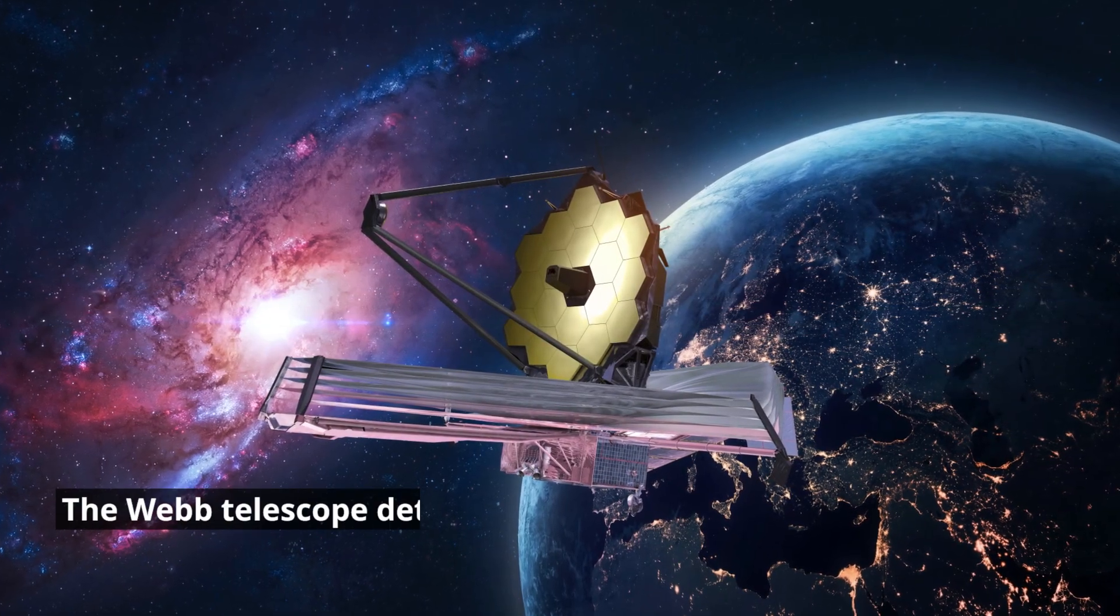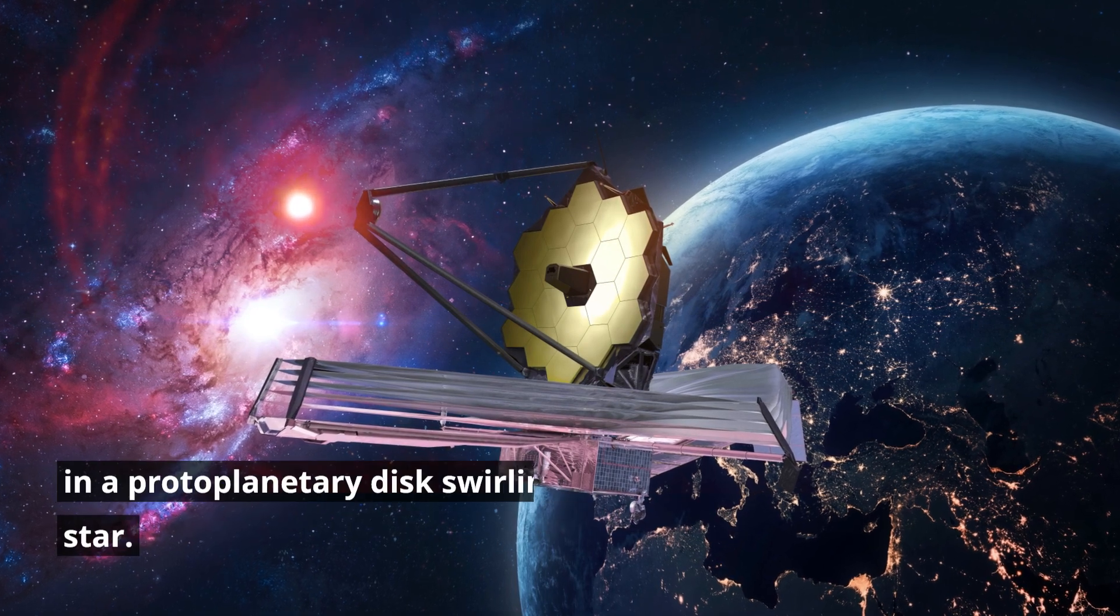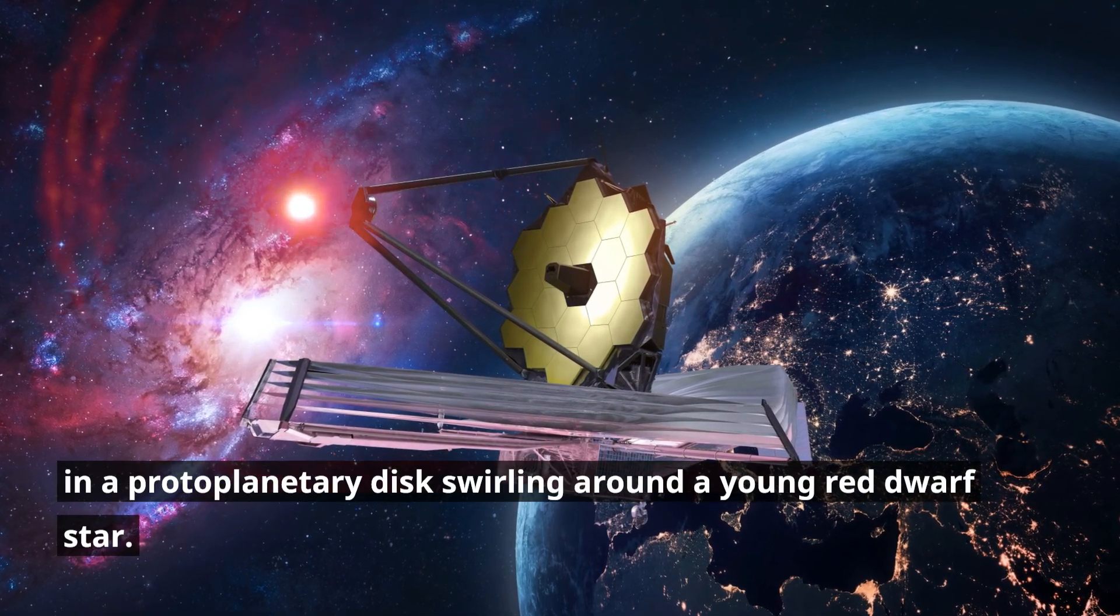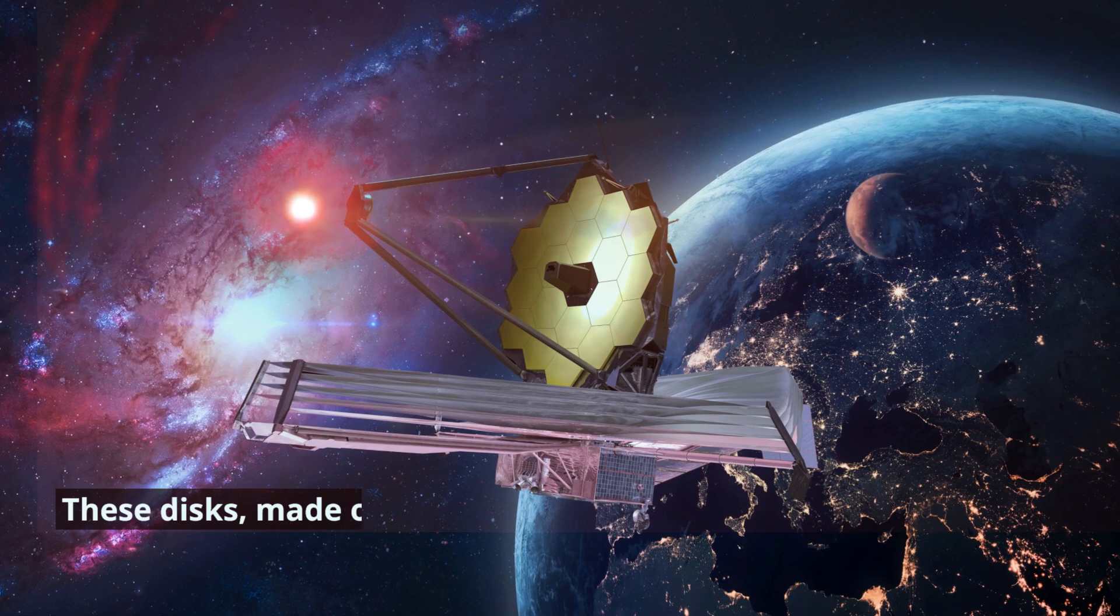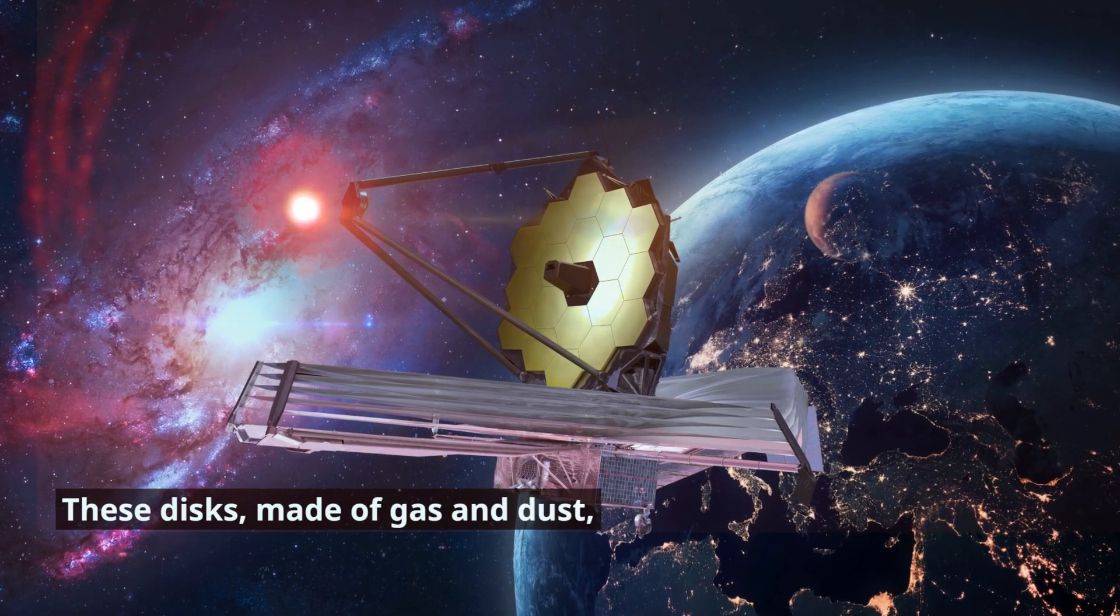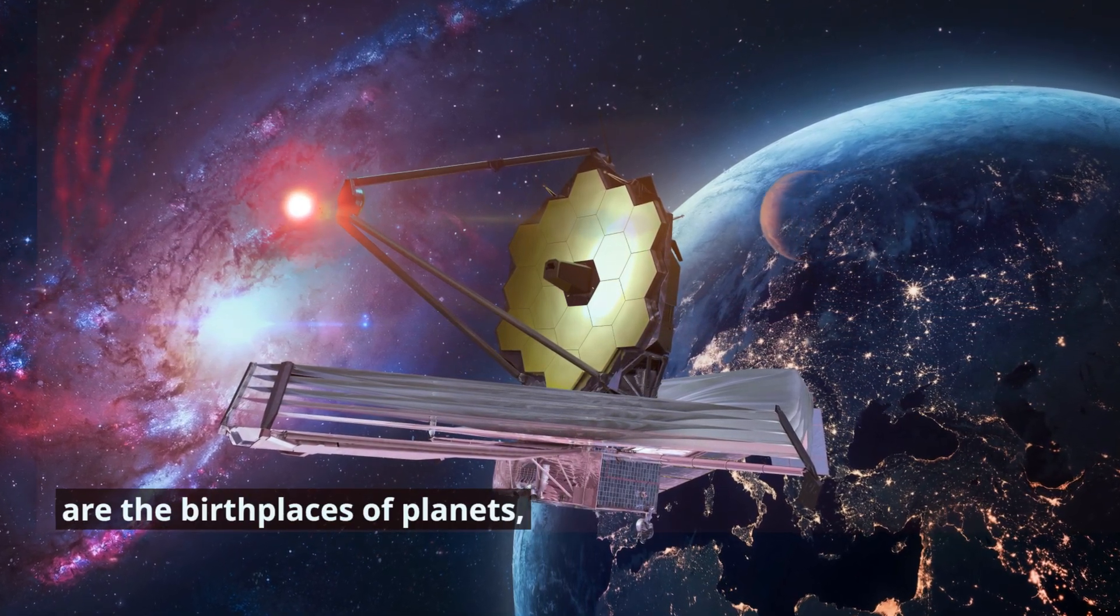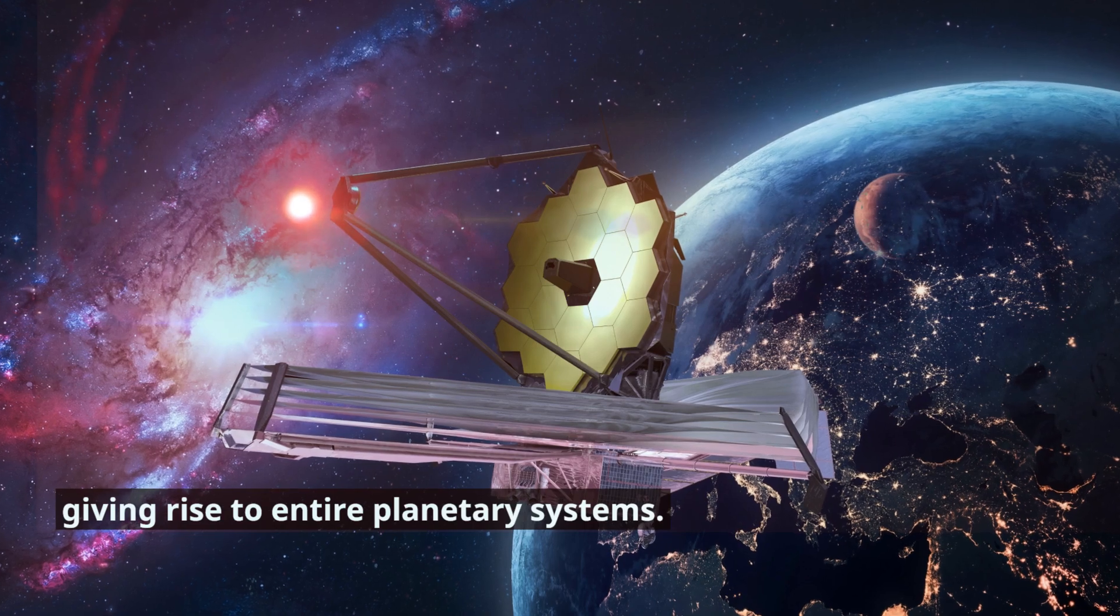The Webb Telescope detected methyl cation in a protoplanetary disk swirling around a young red dwarf star. These disks, made of gas and dust, are the birthplaces of planets, giving rise to entire planetary systems.